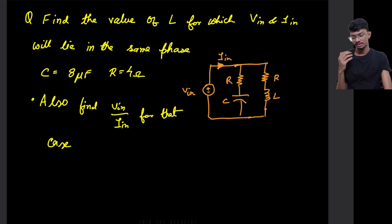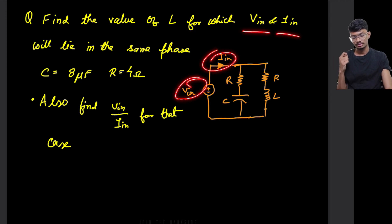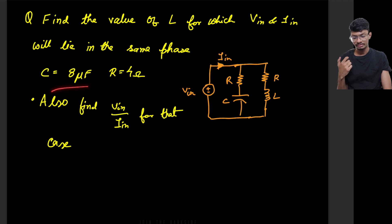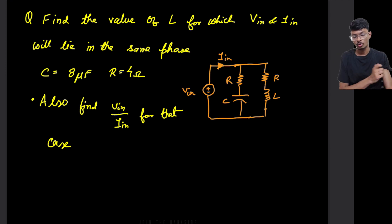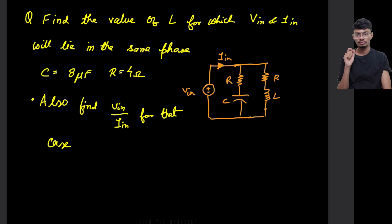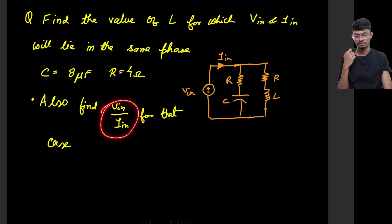We have been given this question which states that we have to find the value of the inductor L for which Vin and Iin should be in the same phase. We have been given that the capacitor has 8 microfarad and the resistor has 4 ohms. We also have to find the ratio of input voltage over current for that case.